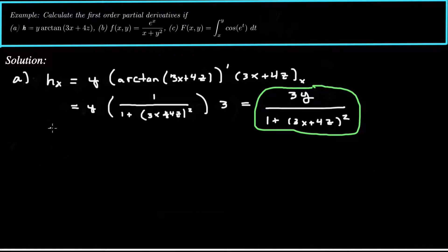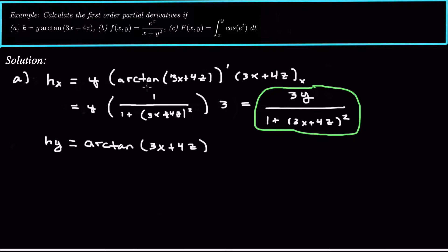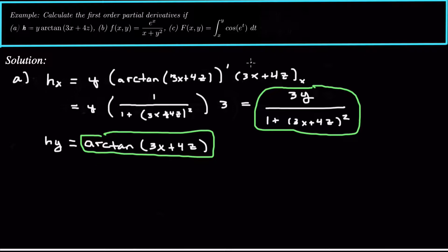Differentiating with respect to y is easier because we treat x and z like constants. So h sub y: the entire arctangent expression acts like a constant multiplied by y. Differentiating with respect to y, we just get the constant, which is arctan(3x + 4z).